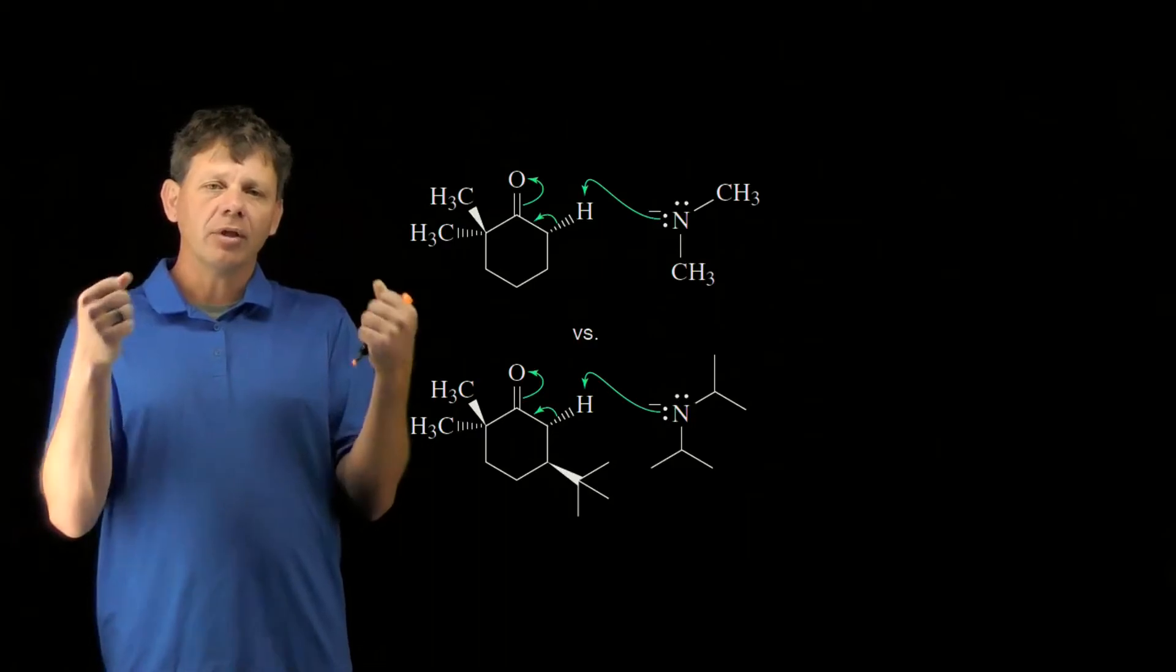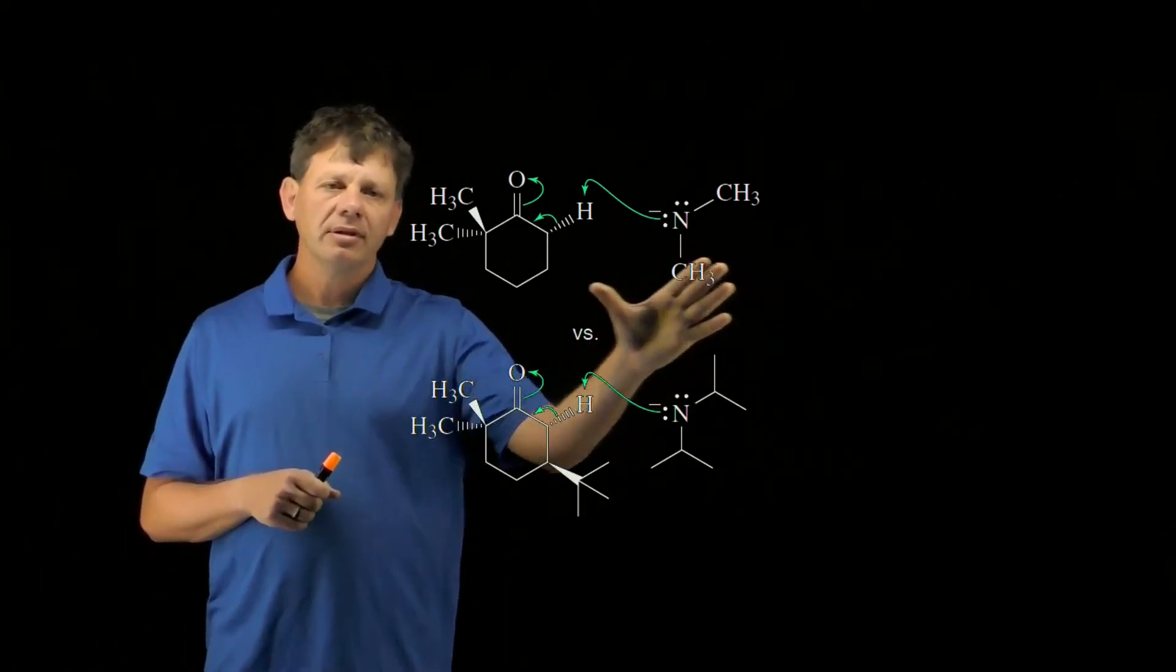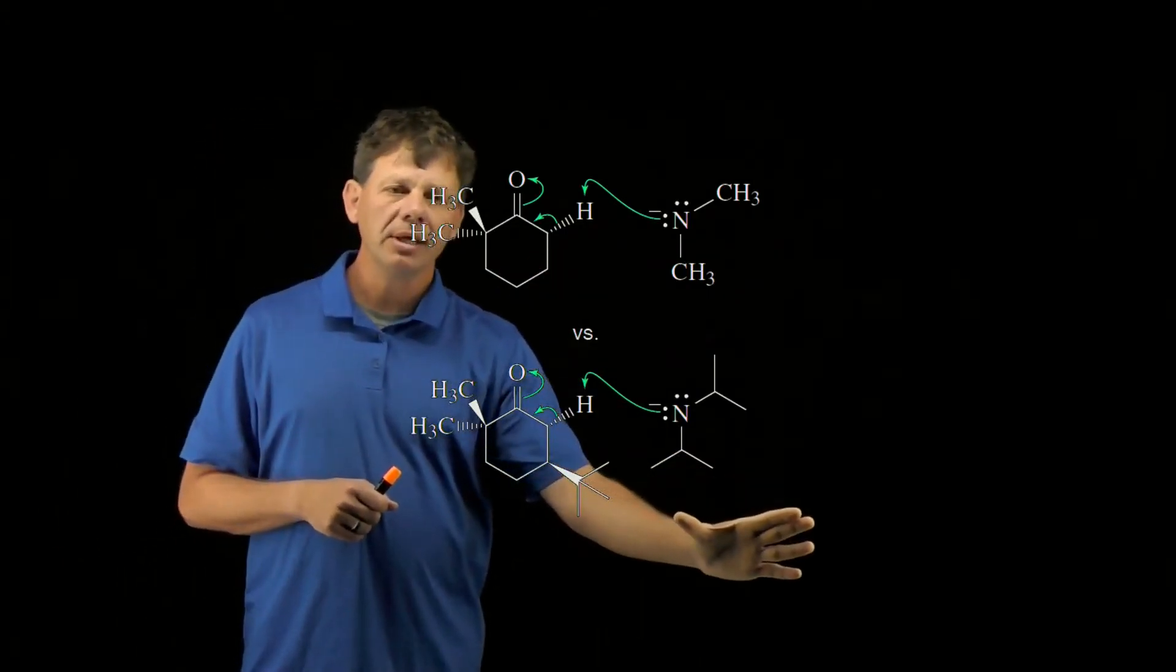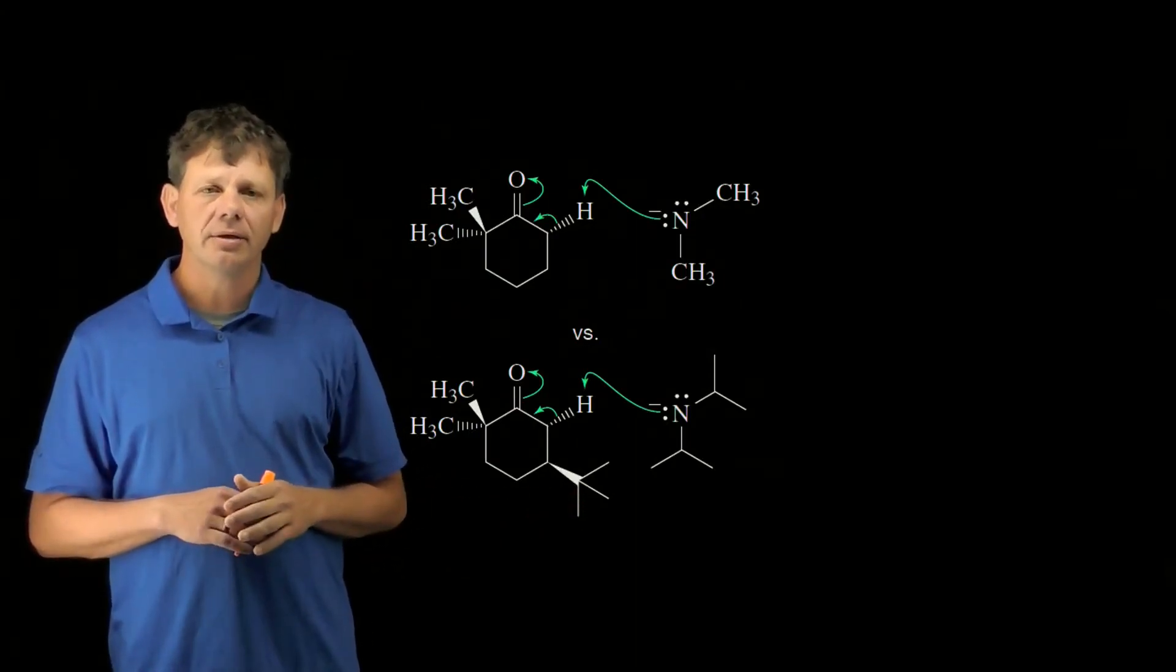And so when we look at the collisions that can happen, here's a smaller base colliding with a less sterically hindered proton versus a very bulky base colliding with a much more sterically hindered proton.